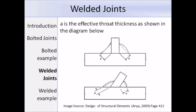A is the effective throat thickness of the weld. In the Eurocodes, figure 4.3 in EN 1993 part 1-8 provides a diagram similar to the one shown here, which helps you work out the value of A.